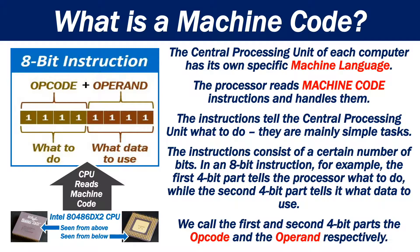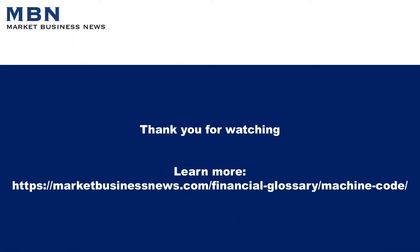In an 8-bit instruction, for example, the first 4-bit part tells the processor what to do, while the second 4-bit part tells it what data to use. We call the first and second 4-bit parts the opcode and the operand, respectively. Thank you for watching this Markets Business News video on Machine Code.